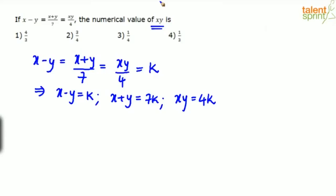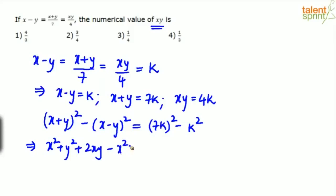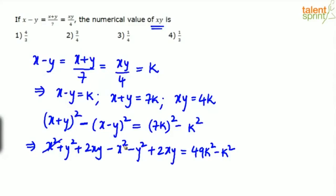We want to find xy. Take (x+y)² minus (x-y)² and expand: x² + y² + 2xy minus (x² + y² minus 2xy) equals (7k)² minus k². Simplifying, the x² and y² terms cancel, leaving 2xy + 2xy = 4xy = 49k² minus k² = 48k².